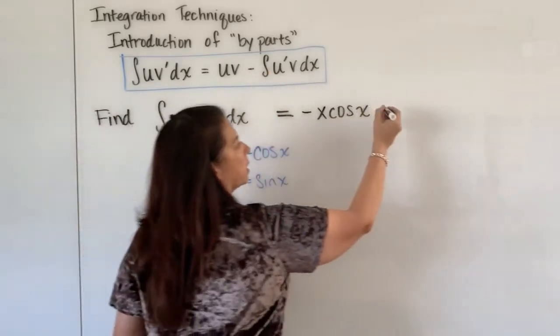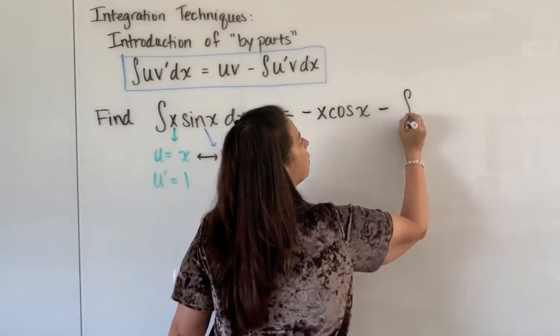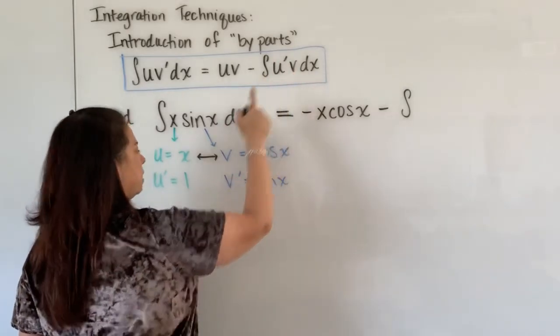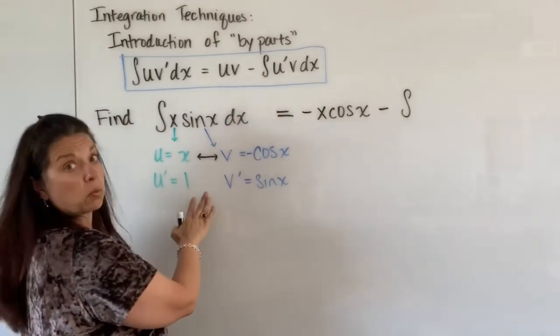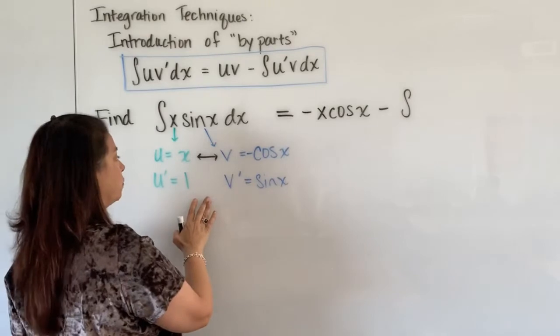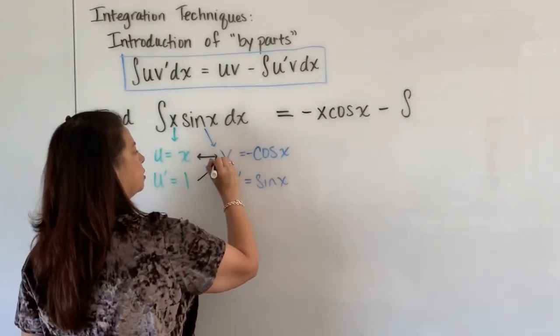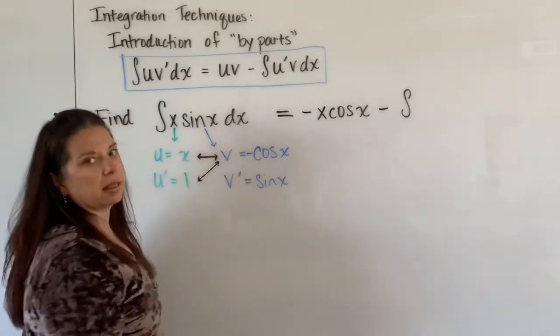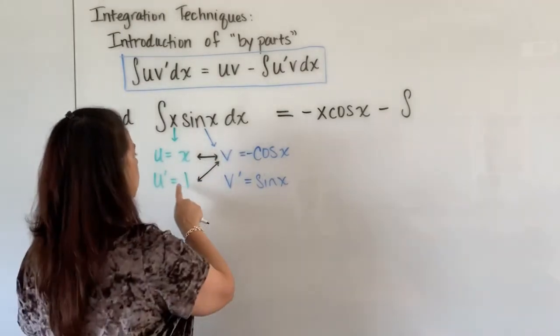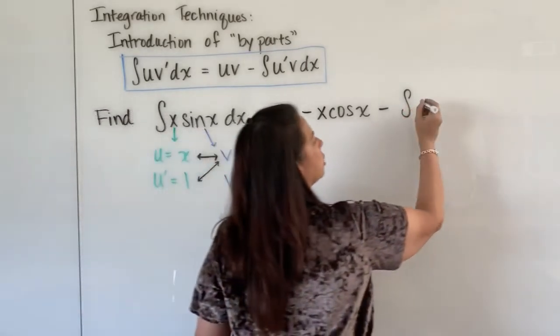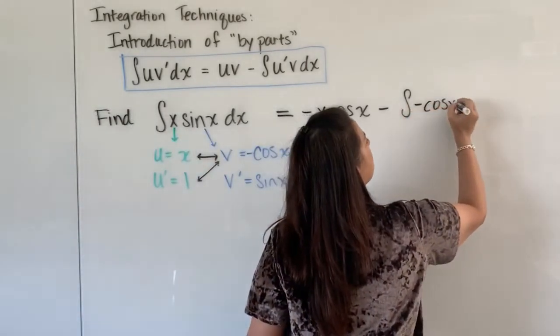Then carry on with the formula. I will subtract off the integral of the u prime times the v. Well here's my u prime. Oh it's a wonderful u prime, it's just one. That's wonderful. Times the v which is negative cosine x. So it's this piece times that piece. So I have one times a negative cosine x, so that's just negative cosine x dx.